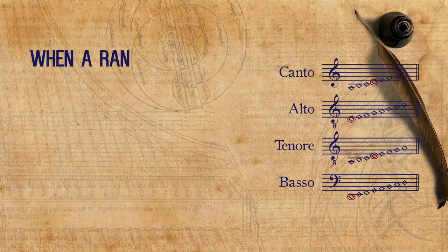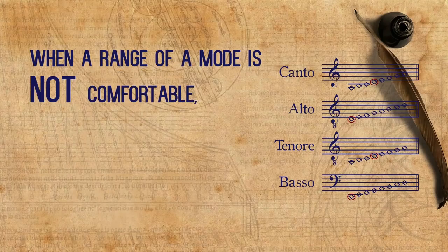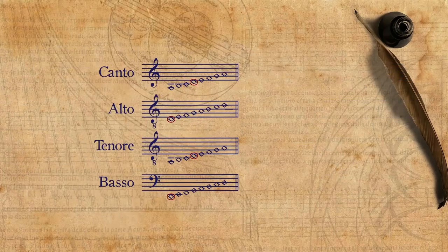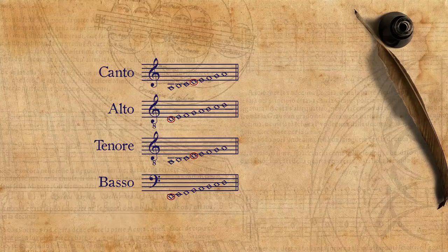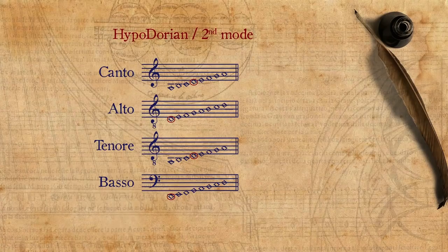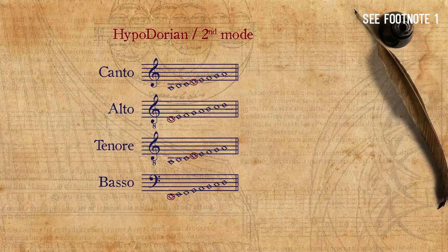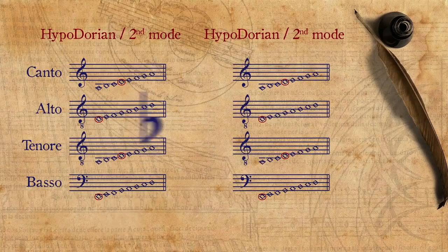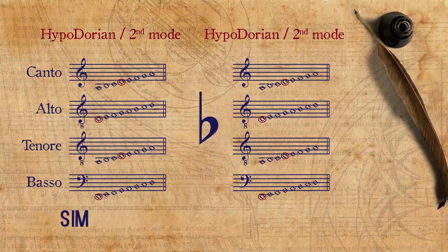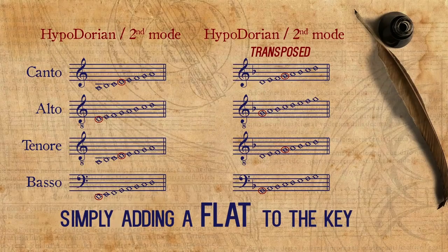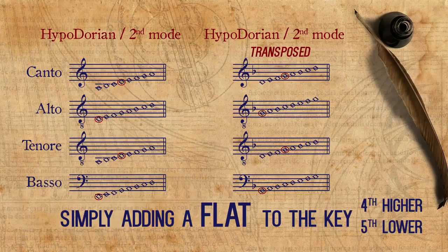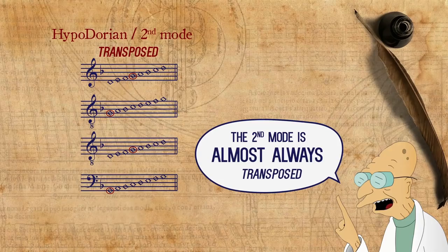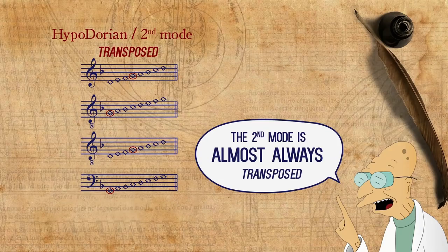This is a good time to mention that when a range of a mode is not comfortable — that is, too low or too high — there is always the possibility of transposition. For example, we have the plagal version of the Dorian mode, the Hypodorian, or the second mode, and we see that it is way too low and out of the comfortable vocal ranges described by theorists. Transposition in the Renaissance is a rather uncomplicated procedure. It consists of simply adding a flat to the key, and this will take the music a fourth higher or a fifth lower. In practice, the second mode is almost always transposed in that manner, since its untransposed version is simply too low.